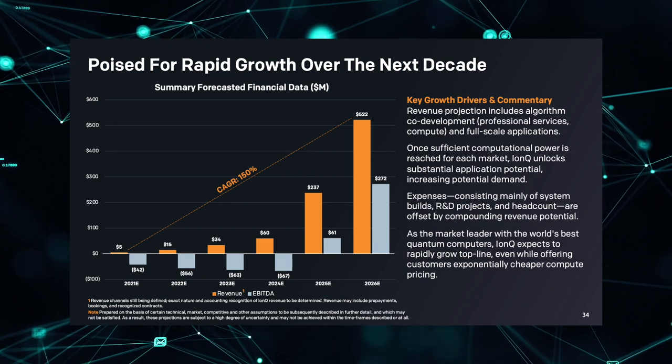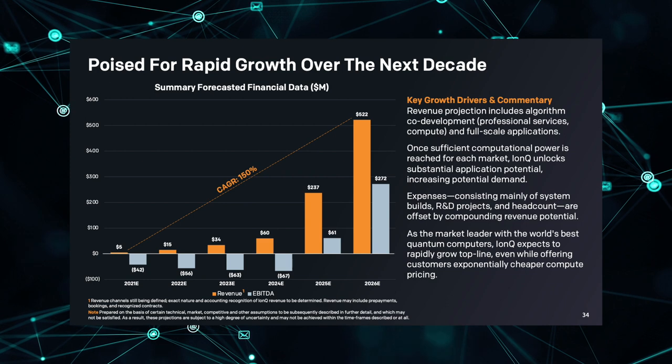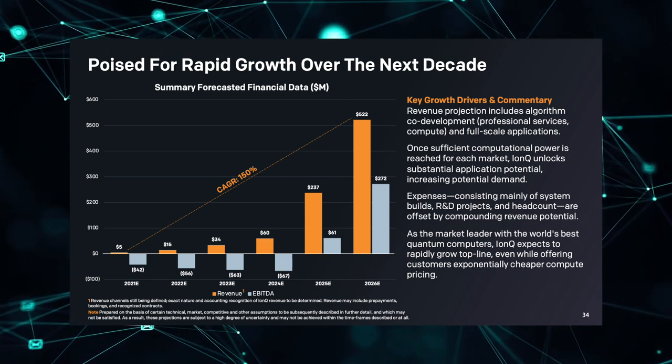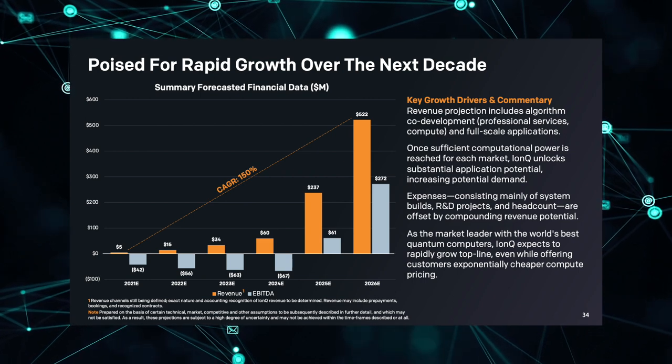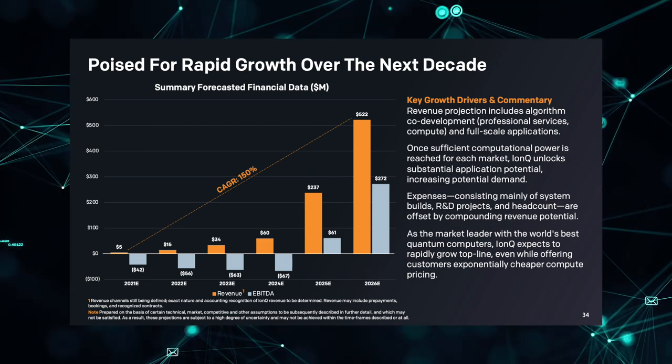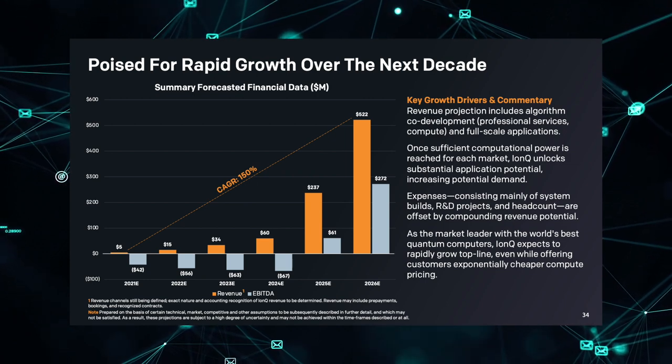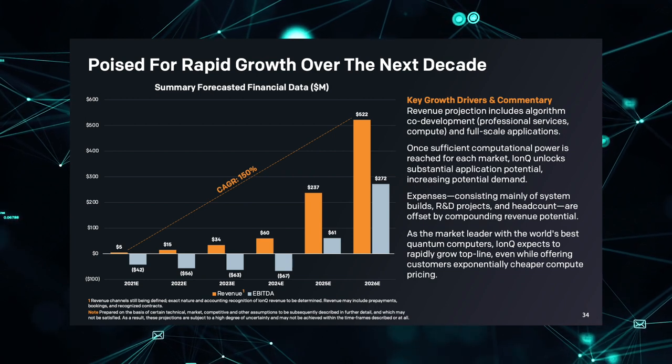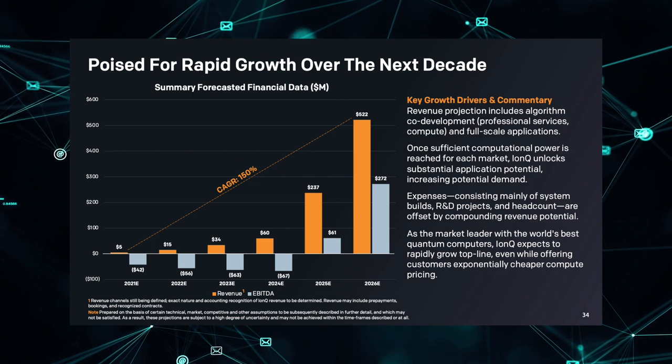In terms of financials, they are projecting a compound annual growth rate of around 150% over the course of the next five years. Just for some extra clarity, they are expecting to pull in $5 million in revenue this year with a loss of around $42 million and aren't expecting to be profitable until 2025, where they're expecting to do $237 million in revenue with a profit of $61 million.